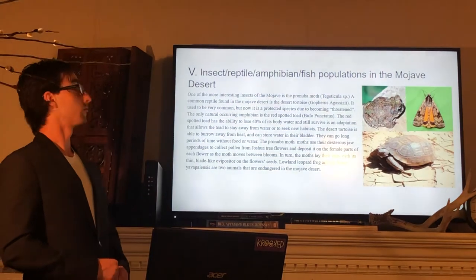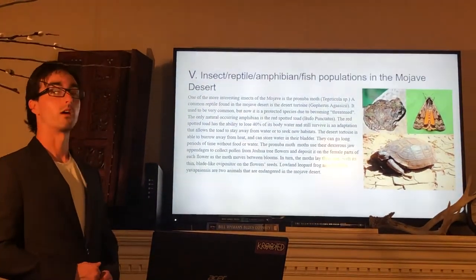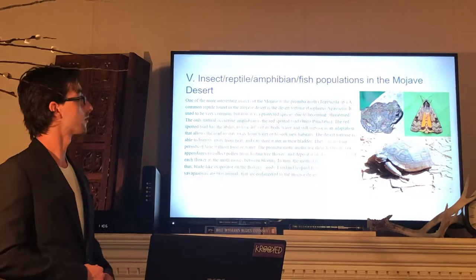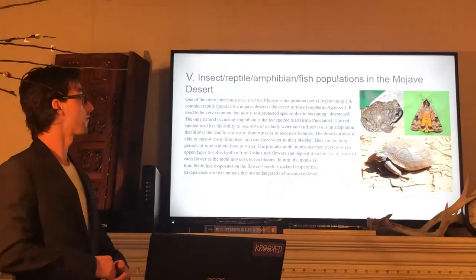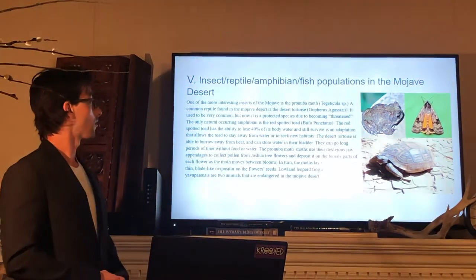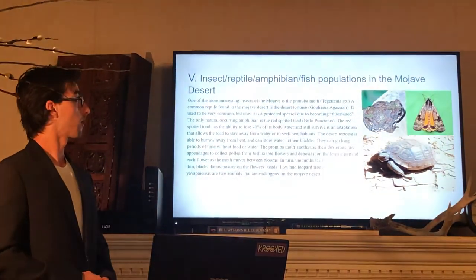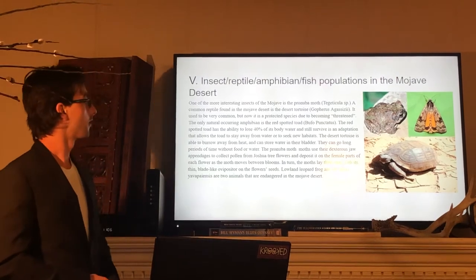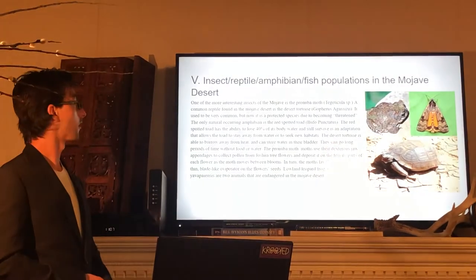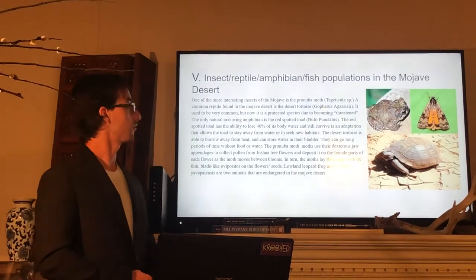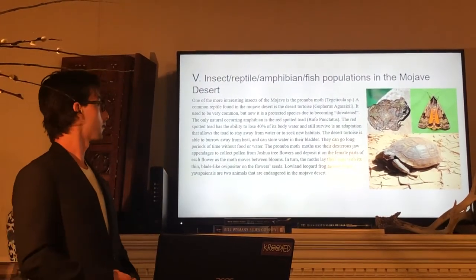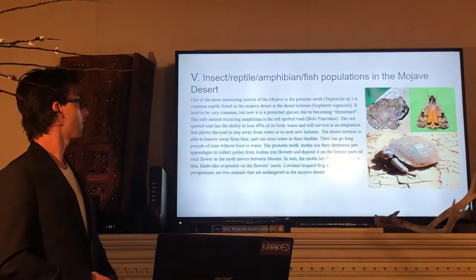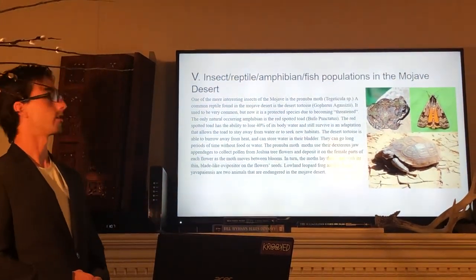The red-spotted toad has the ability to lose 40% of its body water and still survive, an adaptation that allows it to stay away from water in order to seek new habitats. The desert tortoise is able to burrow away from heat and can store water in their bladder. They can go long periods of time without eating or drinking. The pronuba moths use their dexterous jaw appendages to collect pollen from Joshua tree flowers and deposit it on the female parts of each flower as the moth moves between blooms. In turn, the moths lay their eggs with a thin, blade-like ovipositor on the flower's seeds. The lowland leopard frog, Rana yavapaiensis, is one animal that is endangered in the Mojave Desert.